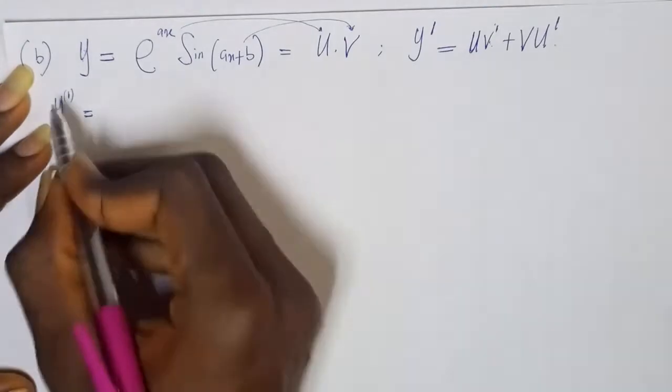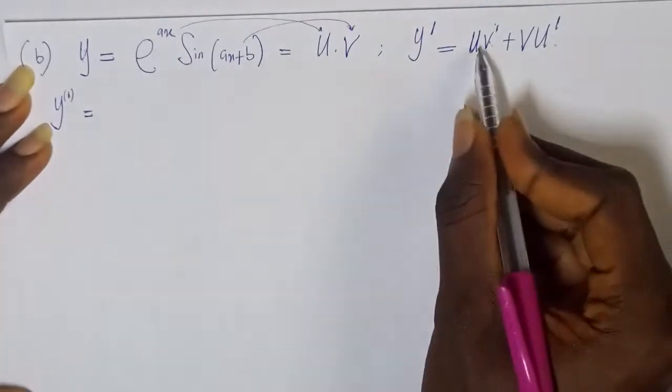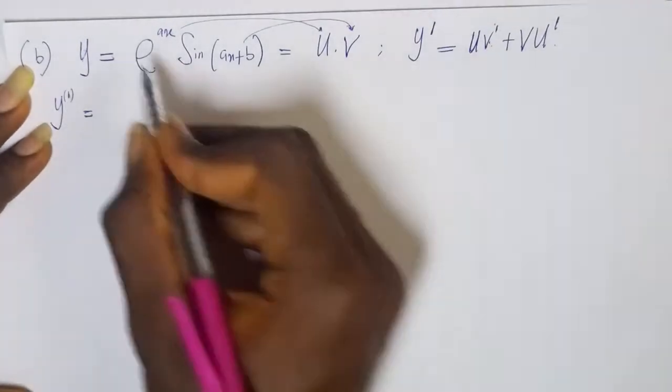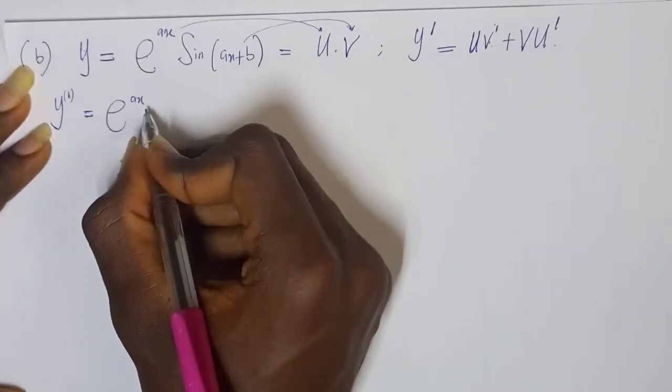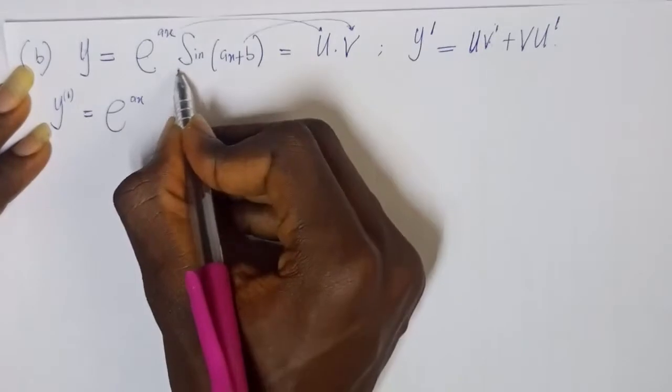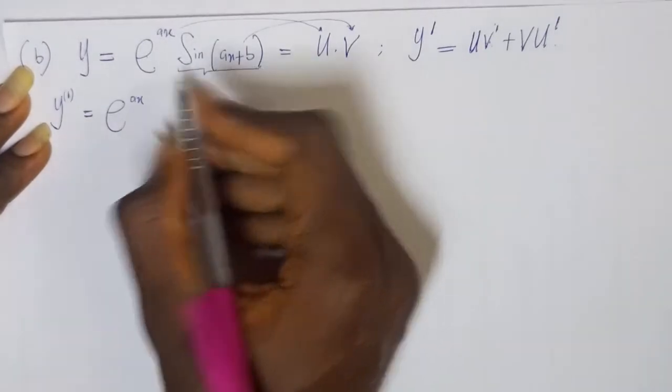So, y' which is the first derivative simply implies uv' plus vu'. What is u? This is my u: u is e raised to the power of ax. Then, differentiate v, v'. If I want to differentiate sine of ax plus b, we all believe that the result should be...